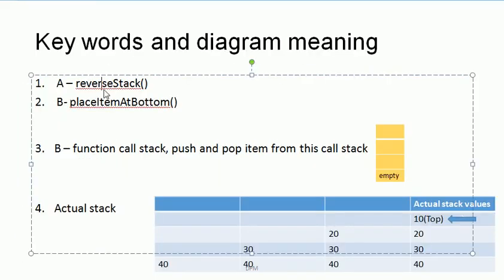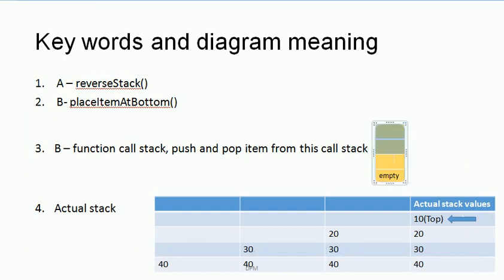So I have used Function A for reverse stack and Function B to place an item at the bottom. The basic purpose of Function B is to push the item to the bottom of the stack while keeping all other items on the top. I will show this in an upcoming slide.